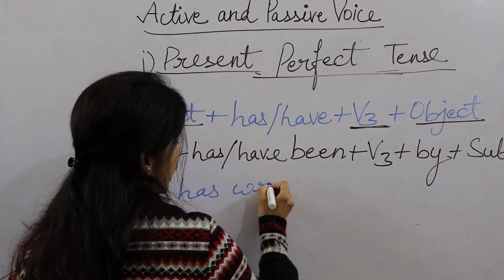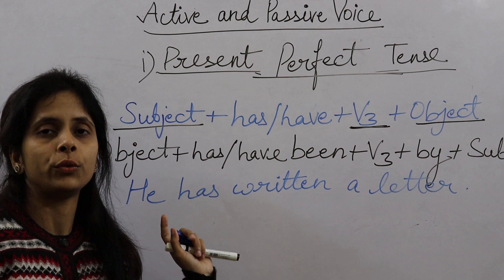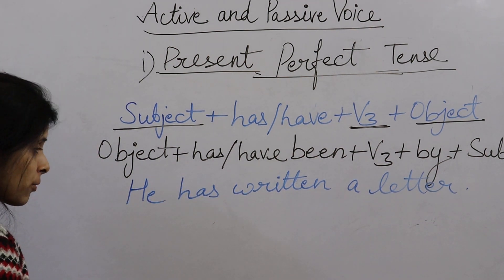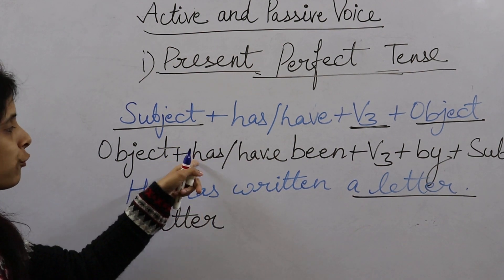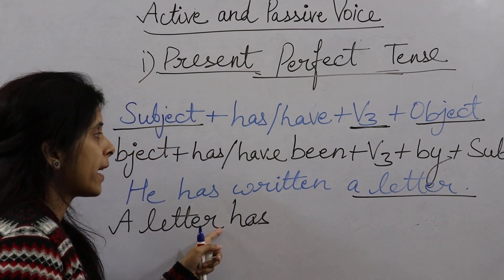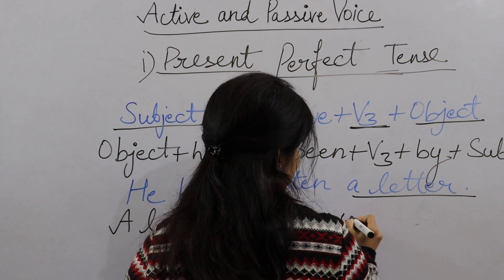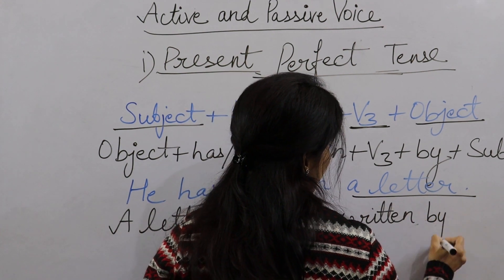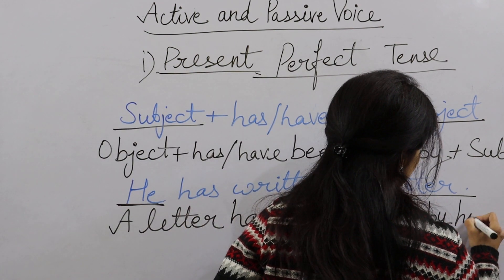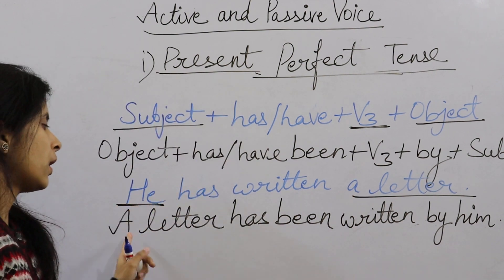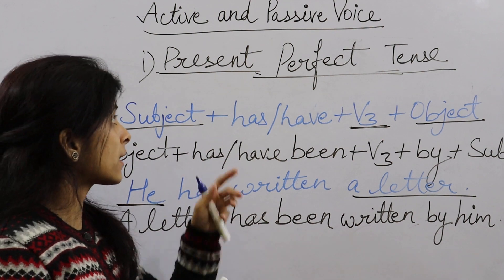Example: He has written a letter. यहाँ 'has' लगा है और Verb की third form 'written' है। Passive Voice: Object 'a letter' पहले आएगा। Formula के according: a letter + has + been + written = a letter has been written. फिर 'by' और subject 'he' — 'he' का object रूप 'him' हो जाता है। तो: A letter has been written by him. यह है Present Perfect Tense का Active and Passive formula।